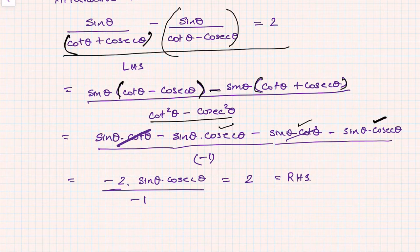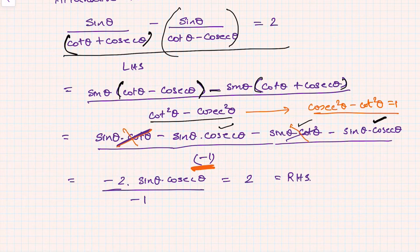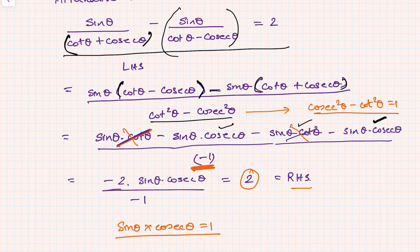Simplifying further gives -2 sin θ cosec θ divided by -1. The denominator is -1 because cosec²θ - cot²θ = 1 by identity, so cot²θ - cosec²θ = -1. Then -2 sin θ cosec θ / -1 = 2 sin θ cosec θ. Since sin θ · cosec θ = sin θ · (1/sin θ) = 1, this reduces to 2, which equals the RHS. So this second approach is much simpler.